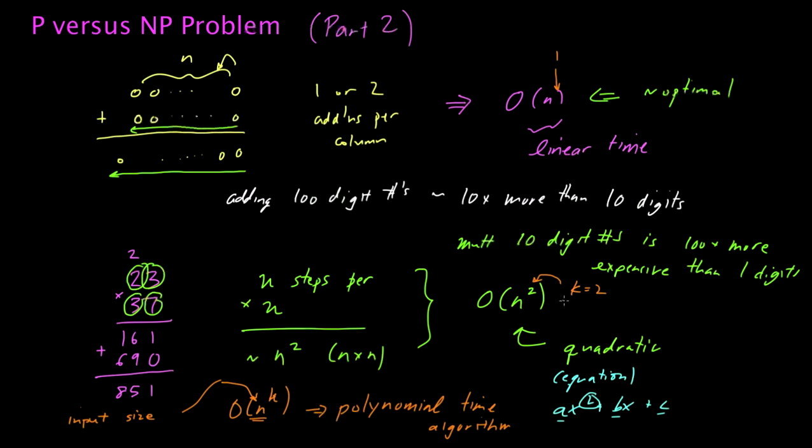If, for example, we had another algorithm running with k equals 3, that would lead to what's known as a cubic algorithm. If we had k equals 4, in other words a running time of n to the 4th, that would be a quartic time algorithm, and so on and so forth—quintic, et cetera.